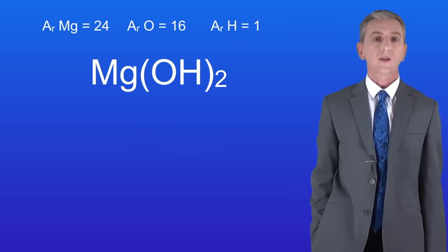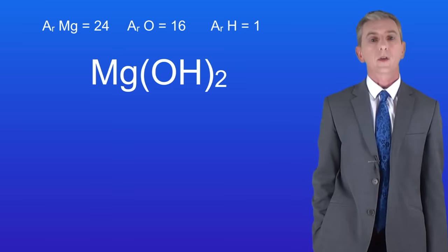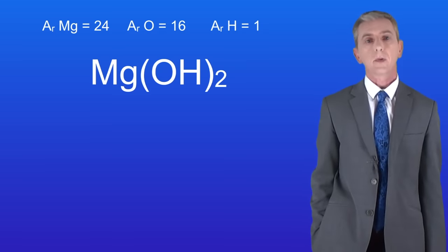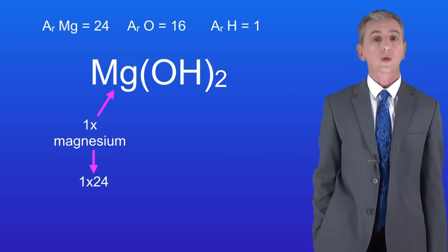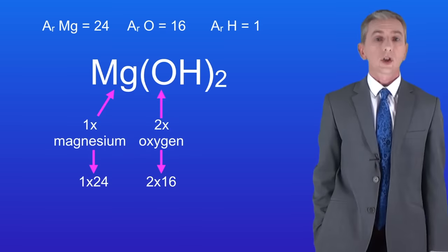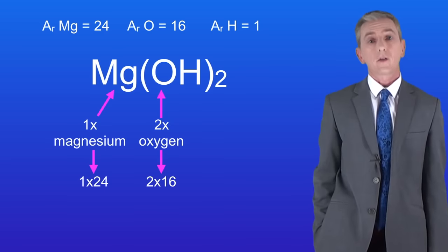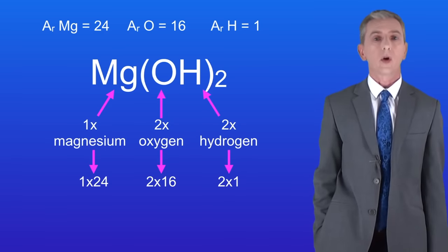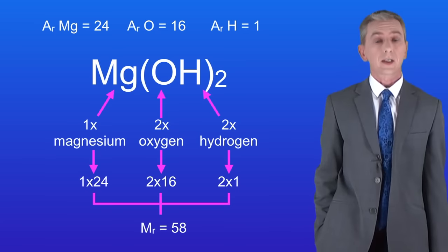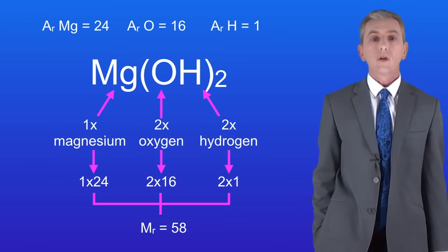Here's one more for you to try. This is magnesium hydroxide. Pause the video and work out the relative formula mass for this compound. We've got one atom of magnesium and magnesium has a relative atomic mass of 24. We've got two atoms of oxygen and oxygen's got a relative atomic mass of 16. And finally we've got two atoms of hydrogen and hydrogen has a relative atomic mass of 1. Adding all of these together gives us a relative formula mass for magnesium hydroxide of 58. Remember that relative formula mass has got no units.